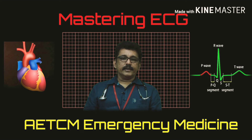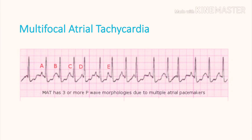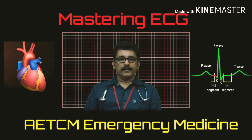If the same ECG pattern of varying P-wave morphologies occurs but with tachycardia — very high heart rate — it is called multifocal atrial tachycardia (MAT). The electrical focus of origination is different (multifocal), it originates from the atrium (atrial), and the patient has tachycardia. MAT is classically seen in hypoxia, especially in COPD patients with acute exacerbation.